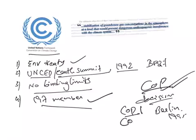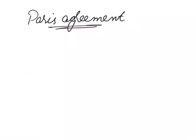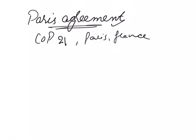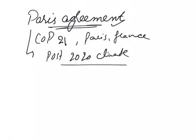The 23rd Conference of Parties meeting was held in Bonn, Germany. There is also a mention of the Paris Agreement in this article. The Paris Agreement was adopted at COP 21 held in Paris, France. This agreement pertains to post-2020 climate actions and facilitates enforcement of global greenhouse gas emission reduction measures in the post-2020 scenario.